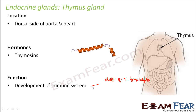Another way thymosine helps is by promoting the production of antibodies. Antibodies are protein structures formed by the plasma cells of blood, used by the immune system to identify and neutralize foreign materials such as bacteria or viruses that get into the blood. So these are the two ways by which thymosine helps develop the immune system.